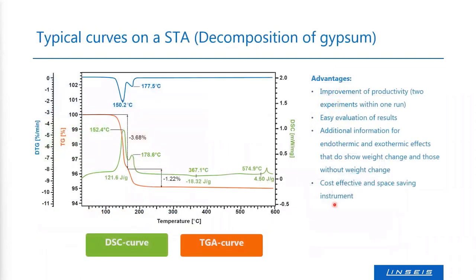Typical curves from an STA instrument look like this. The red curve gives the mass signal — here for a gypsum sample undergoing decomposition — showing weight loss in several steps. You can analyze the weight loss and also measure, with the DSC signal, the enthalpy involved in the decomposition processes.